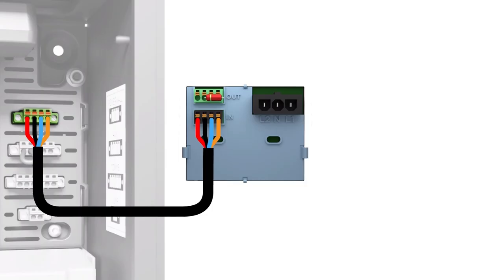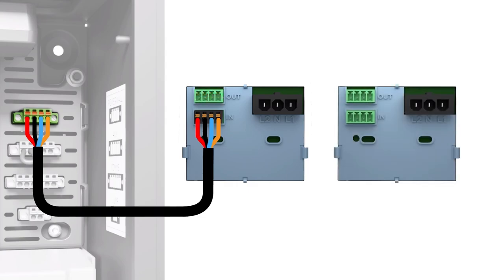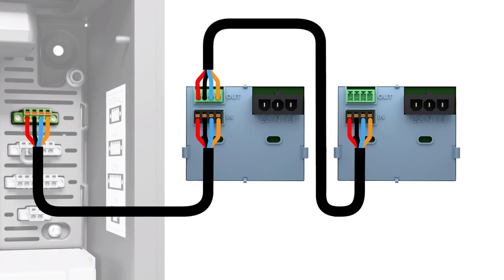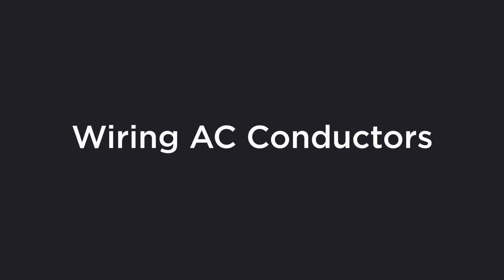If installing more than one Powerwall 2, follow these additional steps. Remove the connector with the resistor from the first Powerwall and connect a new four conductor communication cable from the first Powerwall OUT port to the second Powerwall at the port labeled IN. Continue daisy chaining communication cables from OUT to IN for each additional Powerwall 2. At the last Powerwall 2 in the chain, install the green 4-pin connector with the end of line resistor in the OUT port.